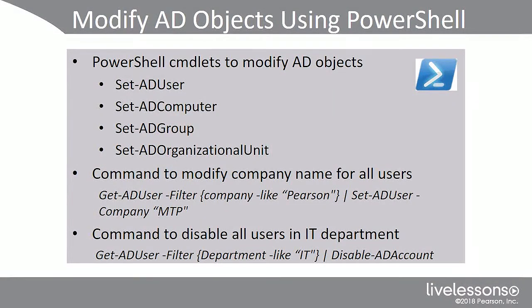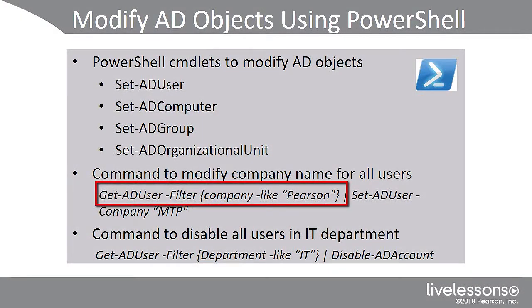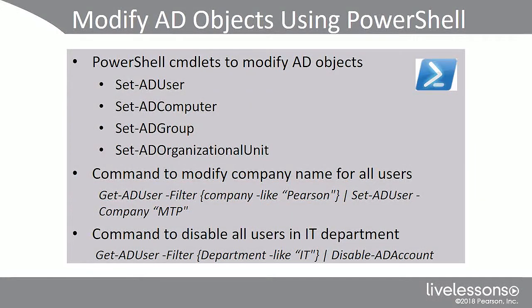Let's use a PowerShell command that contains two commandlets and pipe information between them. The first part of this command is get-ad user with a dash-filter on company dash-like Pearson. It's going to go through Active Directory Users and Computers, find all users that have the word Pearson in the company name, and then we use the pipe option and set-ad user dash-company to MTP. So if they worked for Pearson before, they're all going to work for MTP now.